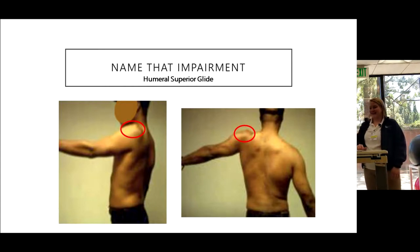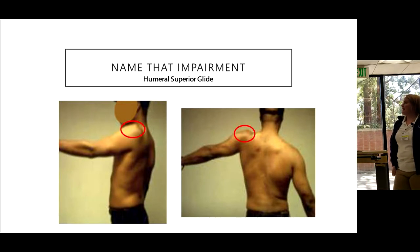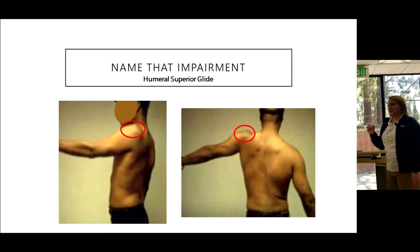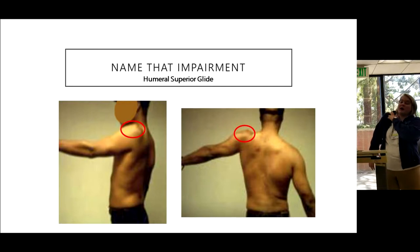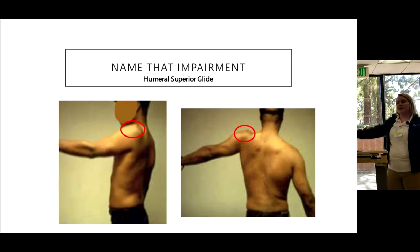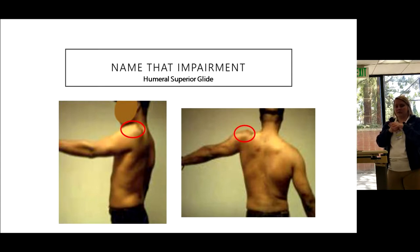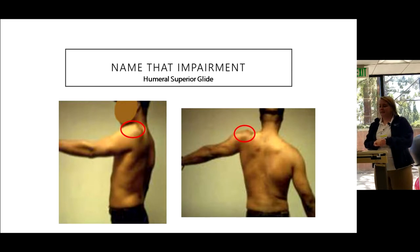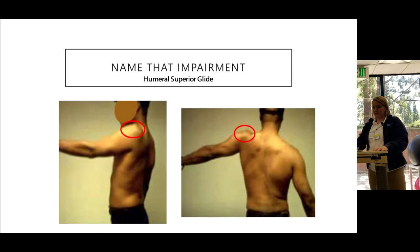Humeral superior glide — we don't see this very often, but it's quite obvious in this patient. If someone has impingement syndrome and a humerus riding too high, that can make symptoms even worse. The question is: is it a shoulder shrug of the whole scapula, or is it just the humerus gliding too high into the acromion? Basically, the rotator cuff muscles that should be holding it stable are not strong enough — similar to anterior glide.